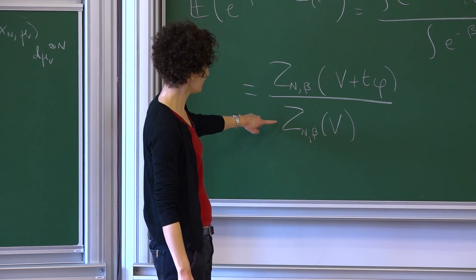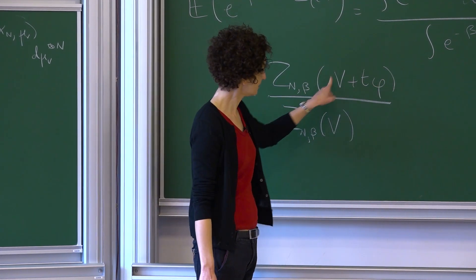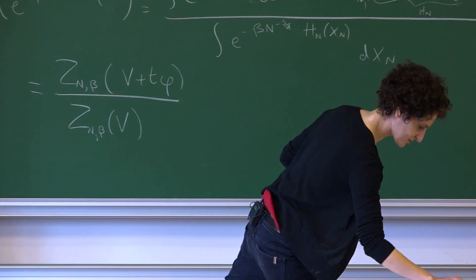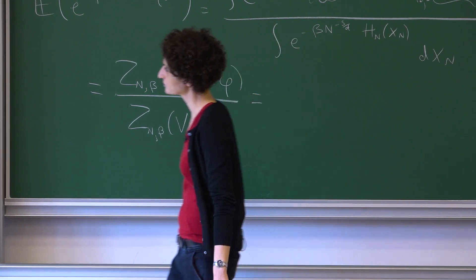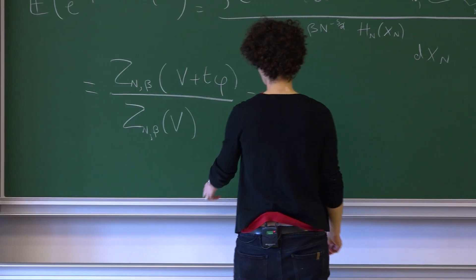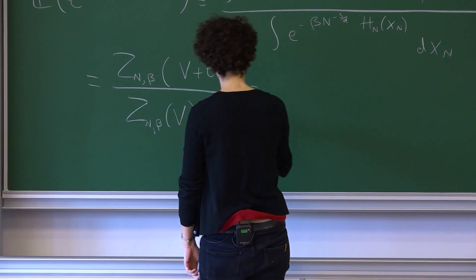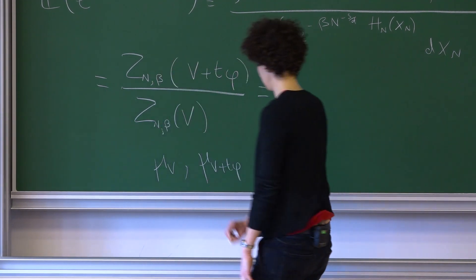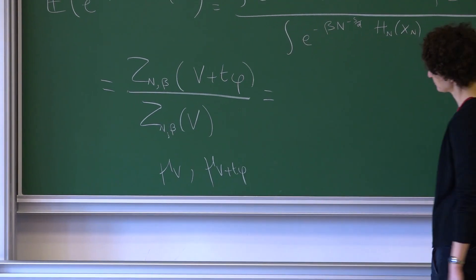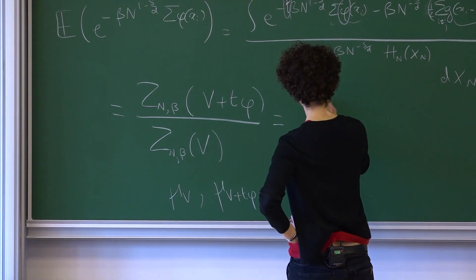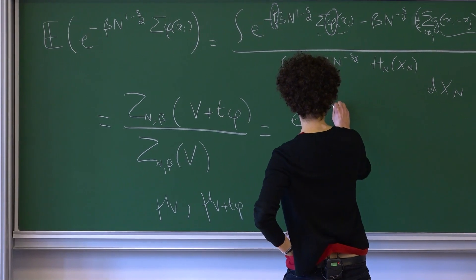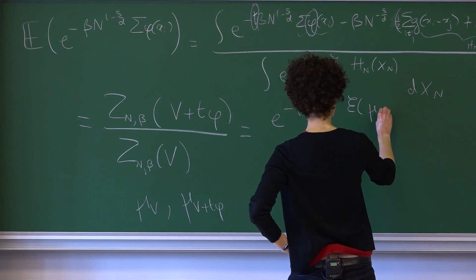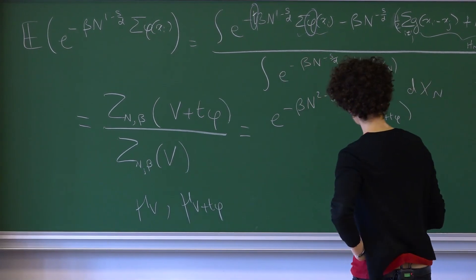How does a partition function depend on V? We have an expansion we saw earlier. The dependence in V is through the equilibrium measure: there is a mu_V and a mu_{V+t*phi}, each with their own equilibrium measure. What comes out is e^(-beta N^(2-s/d) * E(mu_{V+t*phi})).